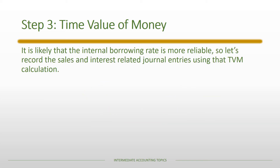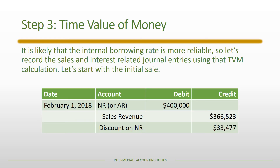In this case, the internal borrowing rate is likely more reliable given that it's a custom-made piece of equipment. Moving forward with that assumption, the initial entry has a note receivable for the face amount of $400,000. Sales revenue recorded is the present value of $366,523. The remaining amount — $33,477 — goes as a discount on the note receivable, representing interest revenue that will be recorded over time. As time passes, the discount is amortized as interest revenue is accrued.